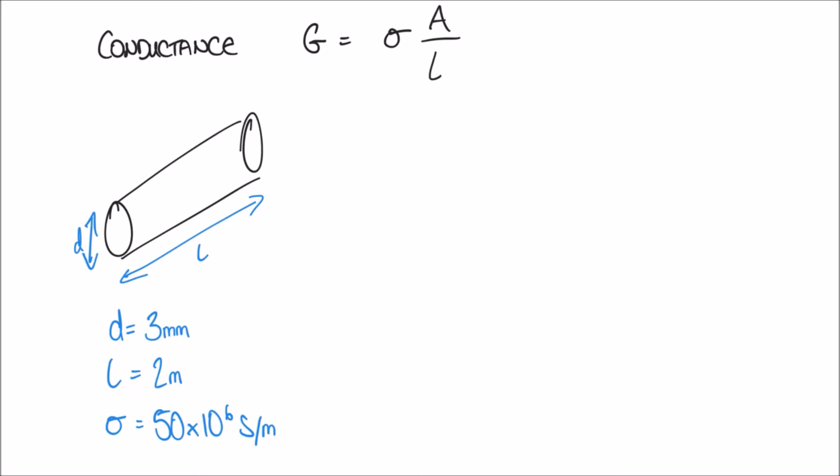Returning to our formula G equals sigma A over L: we know sigma is the conductivity and L is the length. A represents the cross-sectional area of the wire. We have a problem here because we aren't told the cross-sectional area — we're told the diameter — so we need to work out the area before we can do anything else.